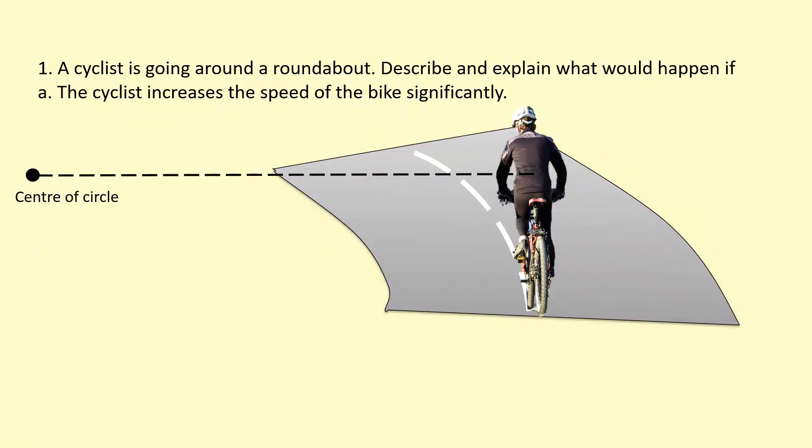A cyclist is going around a roundabout. Describe and explain what would happen if the cyclist increased the speed of the bike significantly. Let's start off with a free body diagram. We've got the weight acting downwards, normal reaction force acting at 90 degrees to the road here, so we need a centripetal force towards the left.